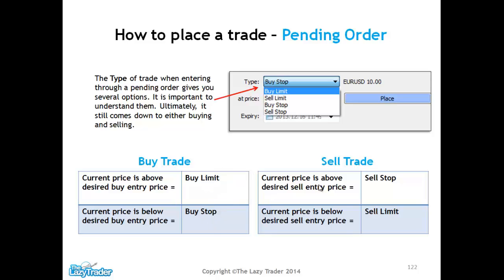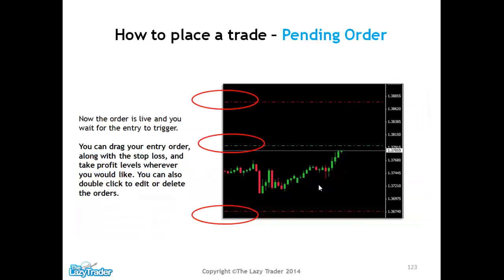For a sell trade — speculating that the market will go down — we select sell stop if the current price is above the desired sell entry price. Conversely, if the current price is below the desired entry price, we select sell limit. Once the order is placed, the lines are painted on the chart just as before: a green line showing where we've entered the market, the stop loss, and the take profit above it.